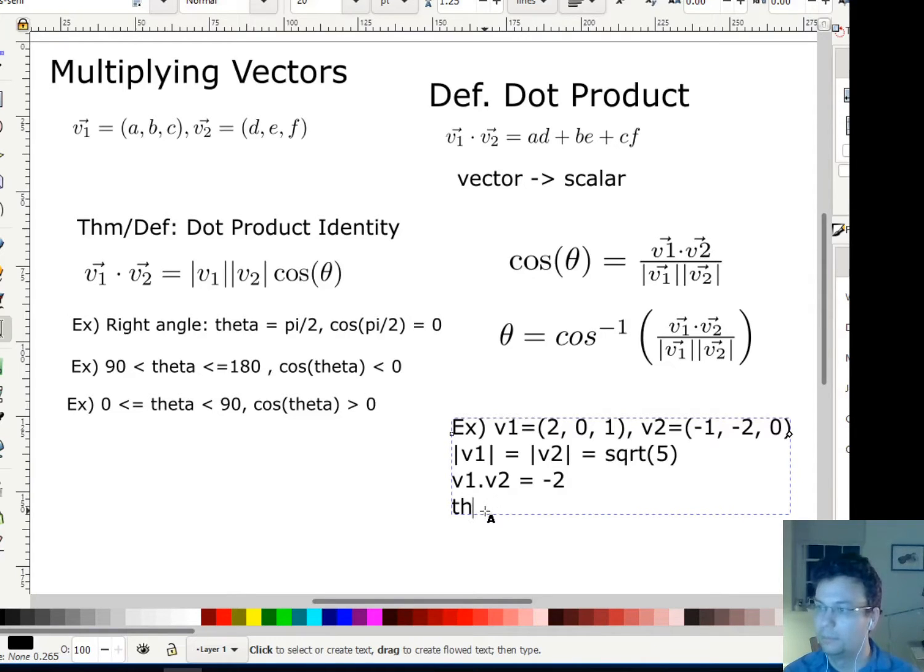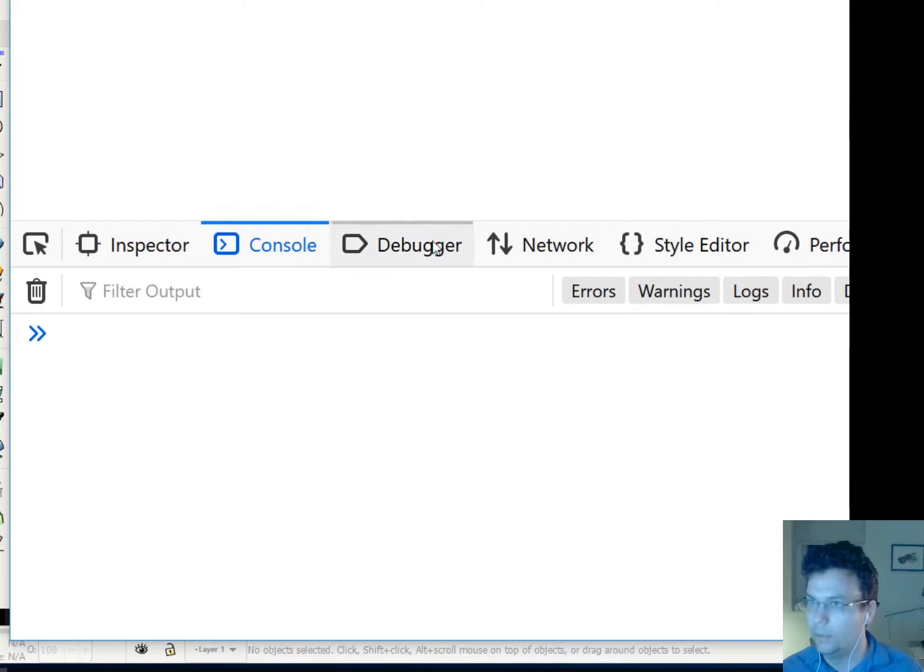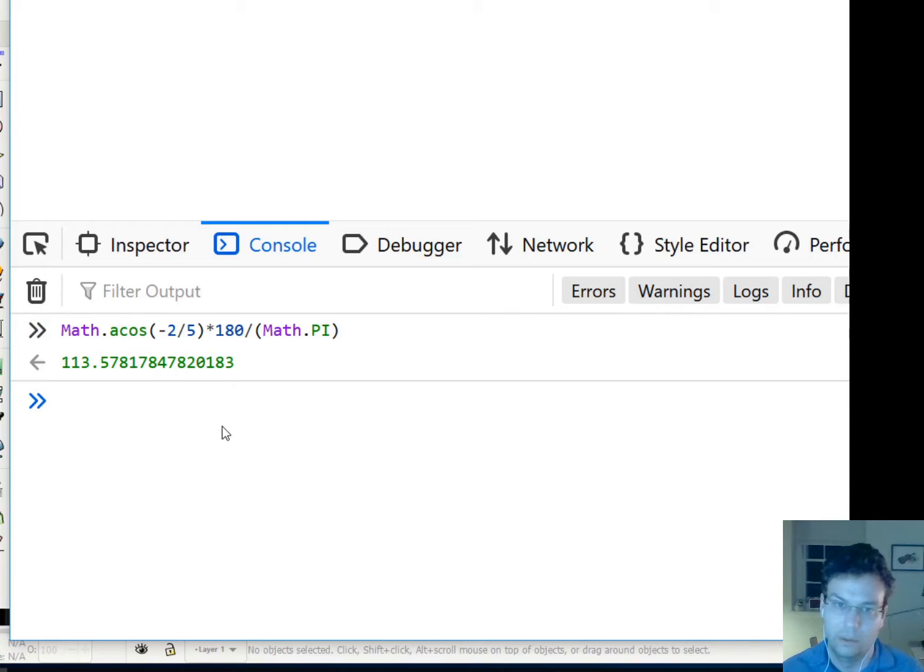Theta is equal to the arc cosine, that's another name for the inverse cosine, of negative 2 over square root of 5 times square root of 5, so negative 2 over 5. I don't know what that is, but I do know just by looking at the dot product that these vectors are going to make an angle greater than 90 degrees. Let me pop into a console in JavaScript and do this. The inverse cosine of negative 2 over 5 is 1.982 radians. Multiplying by 180 degrees over pi, the angle is 113.6 degrees, about 114 degrees.